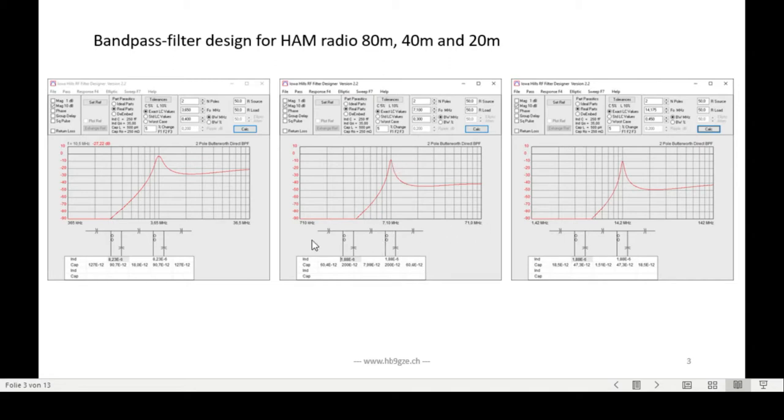This is a cool program. You can choose real parts instead of ideal parts, so it simulates some loss parameters. You choose the bandwidth and center frequency, then calculate. We have chosen an inductance of 1.88 microhenry because these are inductors I had in my junk box. And you get 60 picofarads, 200 picofarads, 8 picofarads, 200 picofarads, 60 picofarads as capacitors.